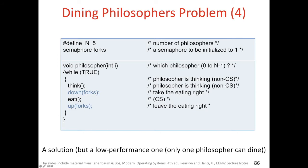Another solution candidate: define N as 5, with a single semaphore called forks initialized to 1. The philosopher function again takes integer I as the philosopher number. In an infinite loop: think as before, then down forks — a single semaphore corresponding to taking both forks, left and right — then eat, which is the critical section, then up forks to leave both forks.